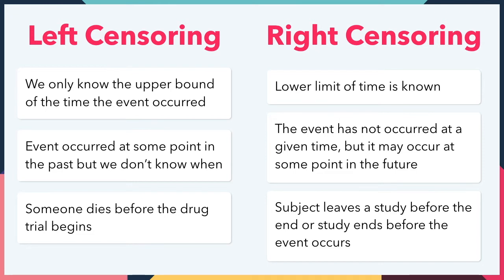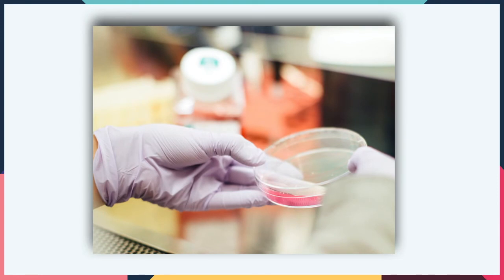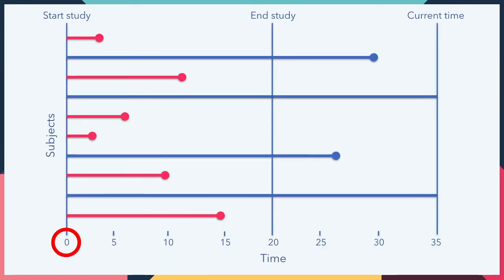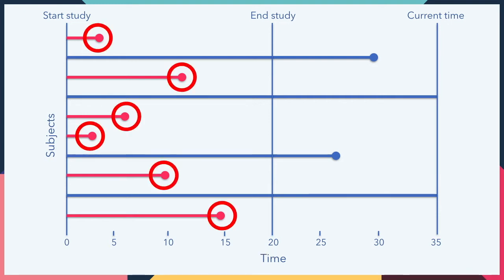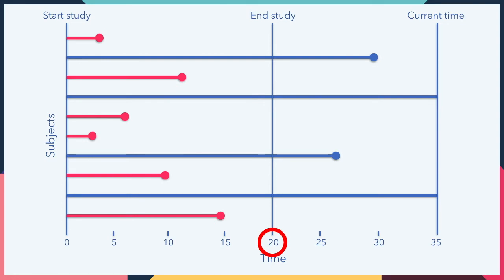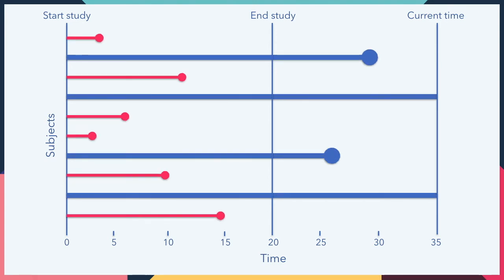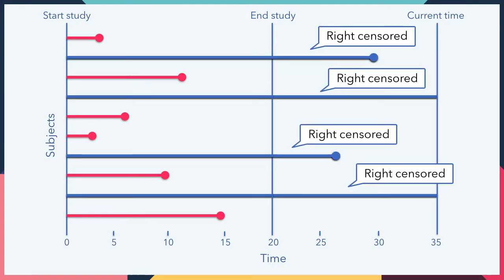Let's first look at an example of right censoring in a medical study. In this example, we have 10 subjects in a study that begins at time t equals 0 and ends at time t equals 20. Each subject is recorded until either the event happens, which is represented by a circle, or the end of the study is reached — the vertical line at t equals 20. We observe the event during the study for the red subjects, and the blue lines represent participants where no event occurred during the study period. Notice that some of the blue lines end before the current time but occur after the end of the study period — they have been right censored. If we did not include this in our analysis, we would be underestimating the true average for our subjects.